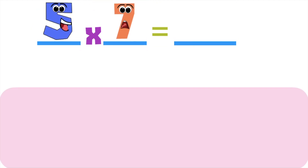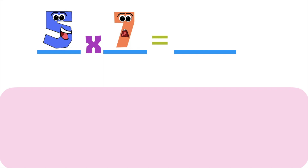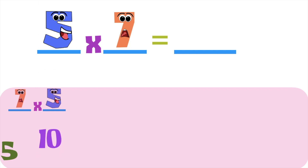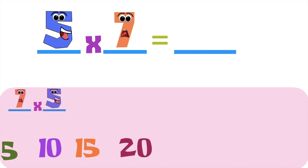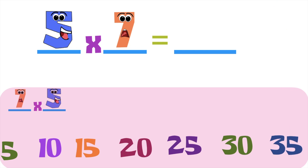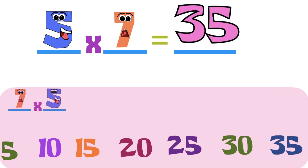How about this one? 5 times 7 is equal to blank. Let's use skip counting by 7. Or, if you don't know skip counting by 7, we can simply use 7 times 5, because according to the commutative property, even though you interchange the position of the two factors, their product remains the same. So, let's skip count by 5 until we reach the seventh multiple: 5, 10, 15, 20, 25, 30, 35. So, 5 times 7 is equal to 35.